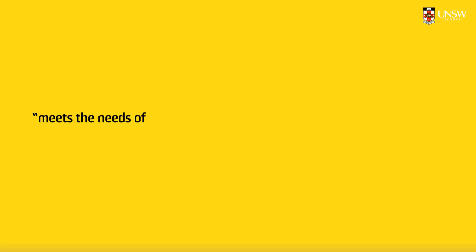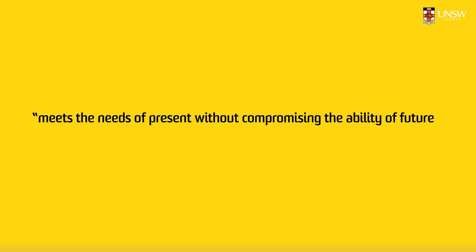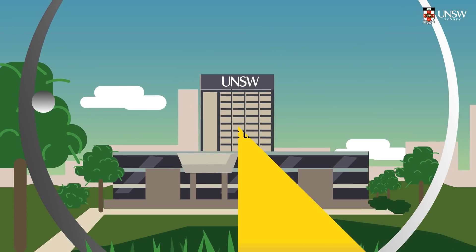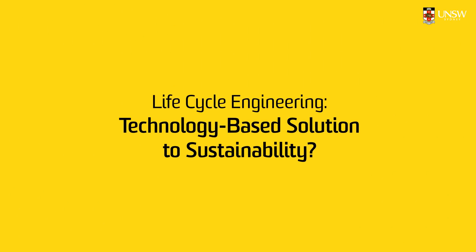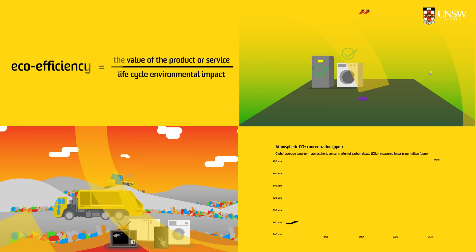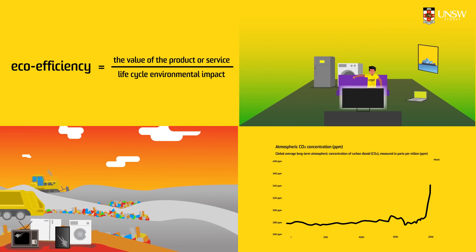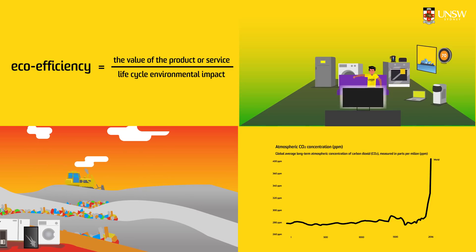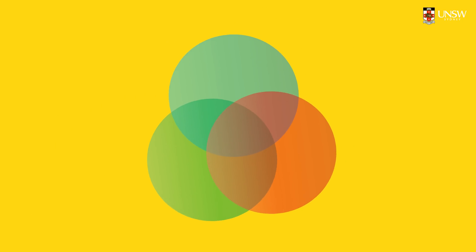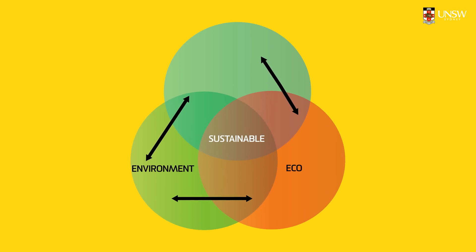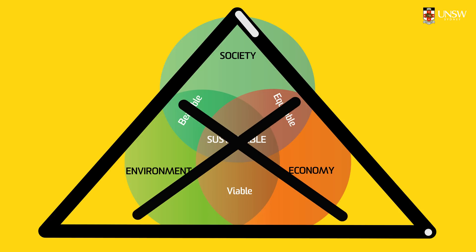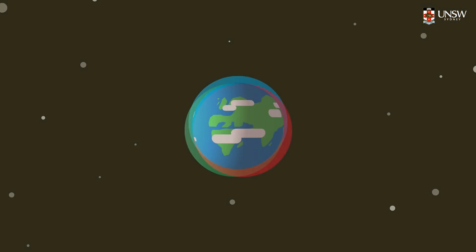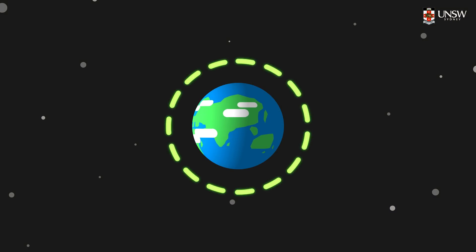How do we meet the needs of the present without compromising the ability of future generations to meet their own needs? As we saw in our previous video, it's evident that improving a product's environmental footprint or eco-efficiency is not enough to solve the problem. We need to move away from the idea of trading off the three interacting dimensions — the environment, the economy and society. This triple bottom line approach will not address the sustainability crisis. Therefore, our concept of sustainability needs to change from relative to absolute.